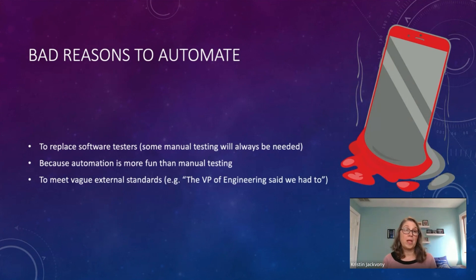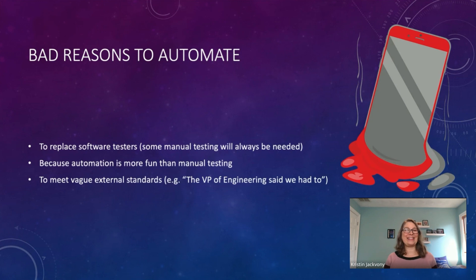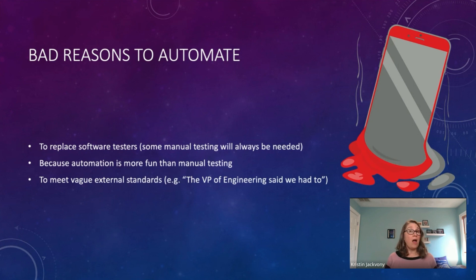Another bad reason to automate is because automation is more fun than manual testing. There are many people who find automation fun, but they shouldn't be automating just because they like to — there should be actual reasons for working on the project. Another bad reason is to meet vague external standards, like 'the VP of Engineering said we had to.'